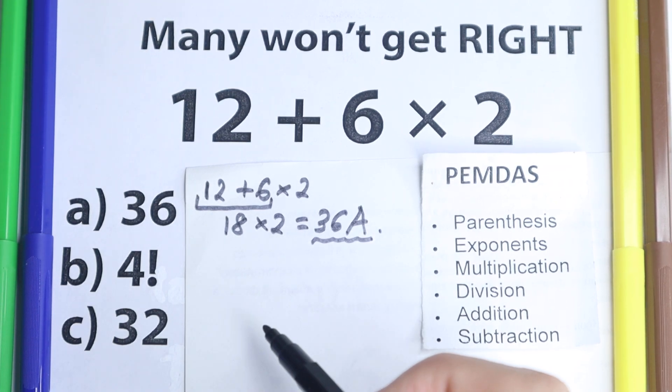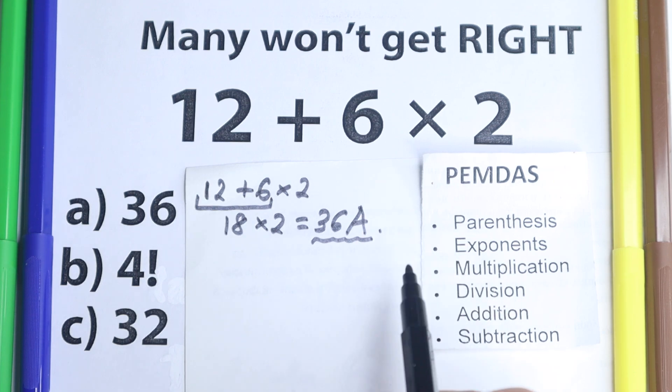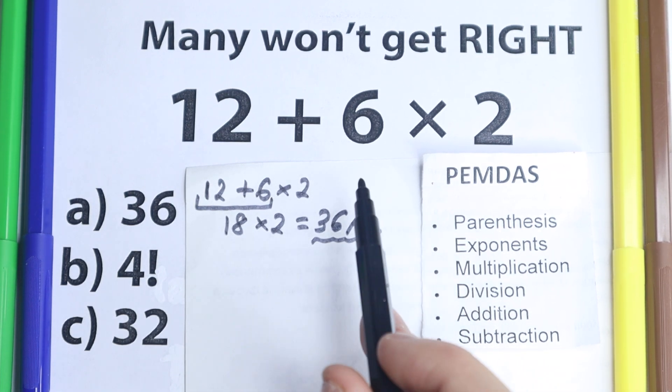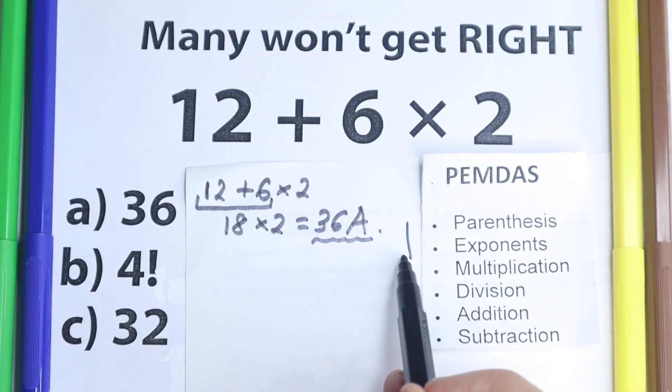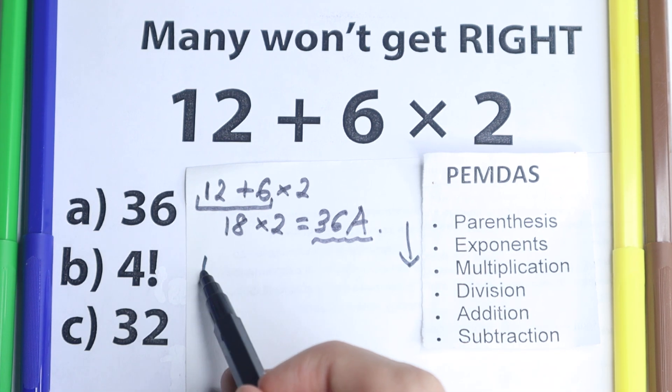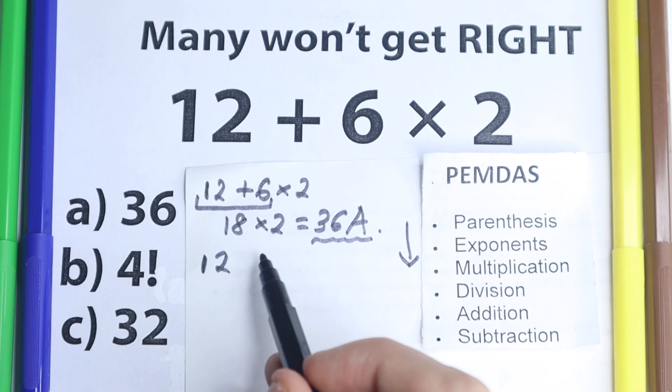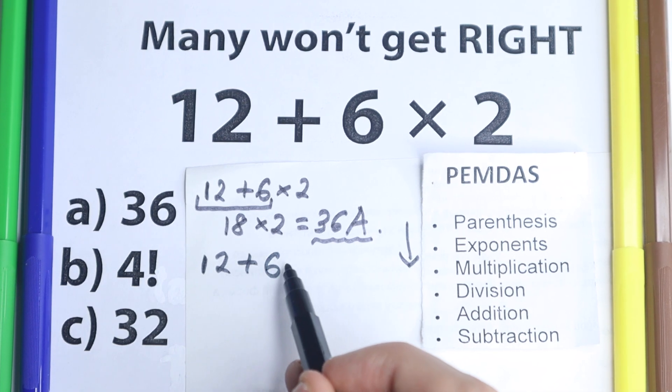Doesn't matter what order of operations you prefer, maybe BODMAS, maybe PEMDAS. I prefer PEMDAS, and moreover doesn't matter PEMDAS and BODMAS, in this case both are doing great. So we have PEMDAS order of operations. Let's look. Let's solve this question according to the correct order of operations and let's check our answer in the end. So 12 plus 6 times 2.